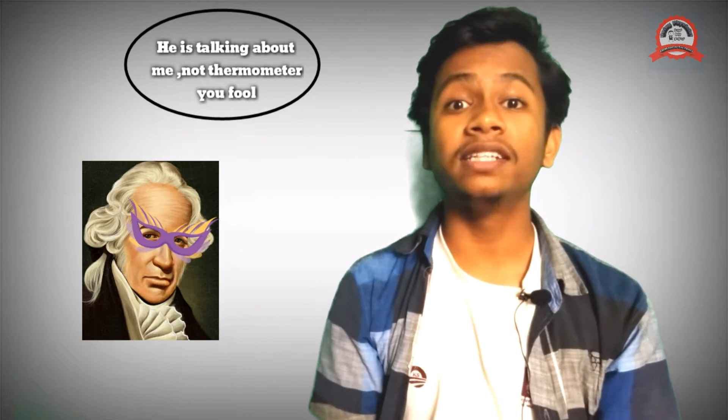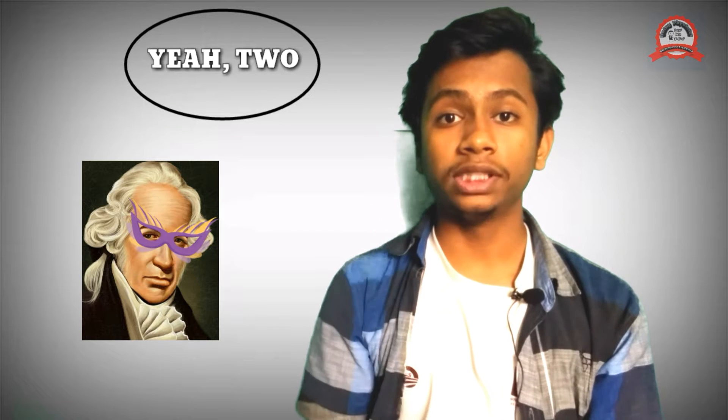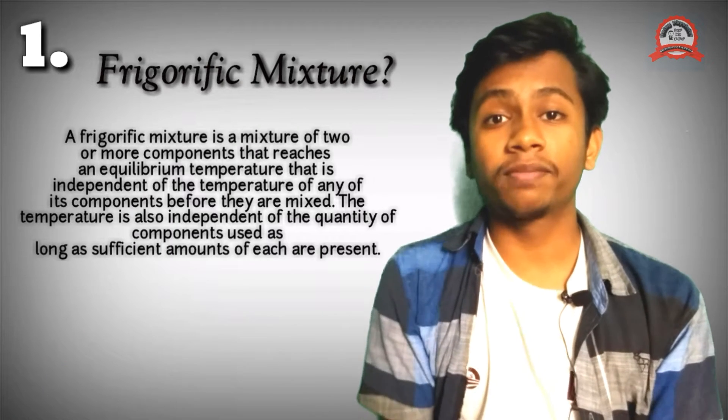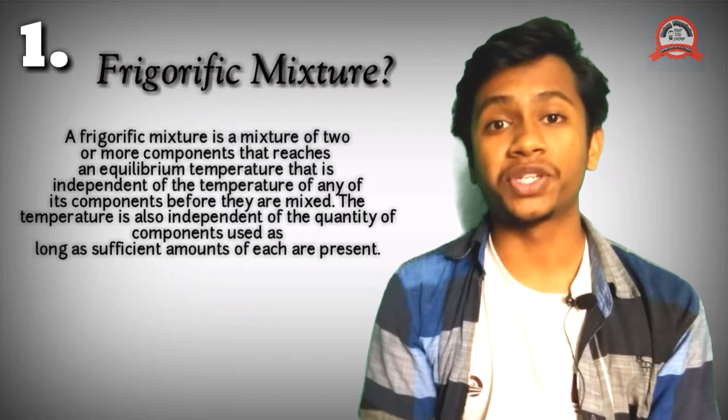Fahrenheit proposed his temperature scale in 1724, basing it on two reference points. Number one, zero point was decided by placing the thermometer in the mixture of ice water and salt. The salt was ammonium chloride, not the common salt. This is a frigorific mixture which stabilizes the temperature.